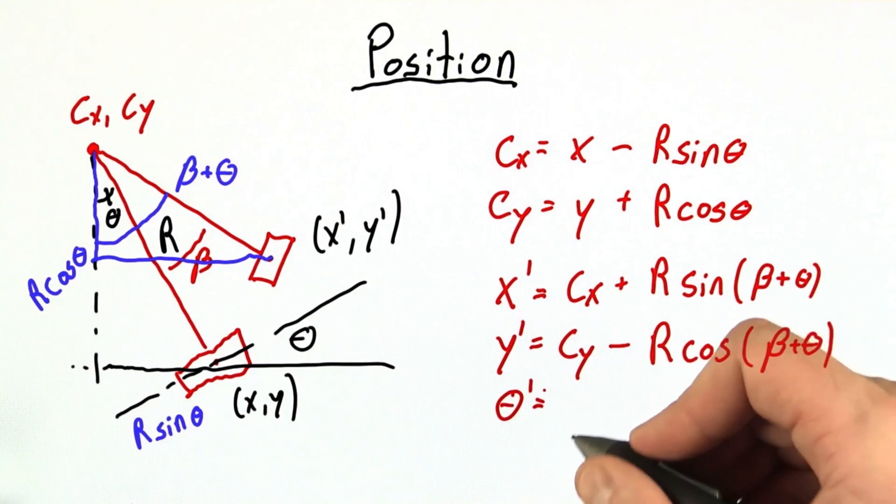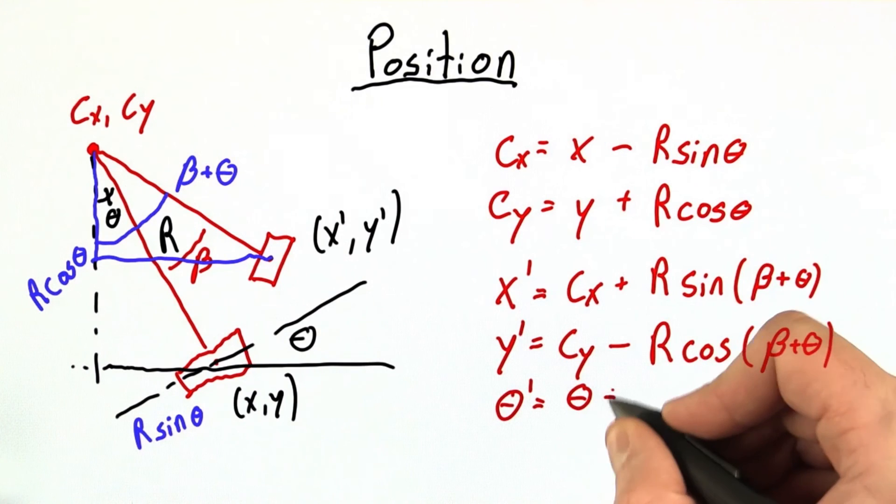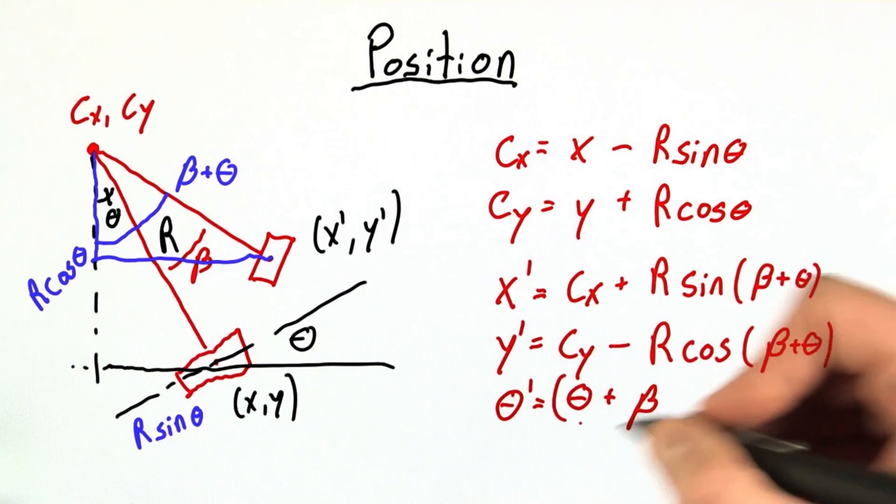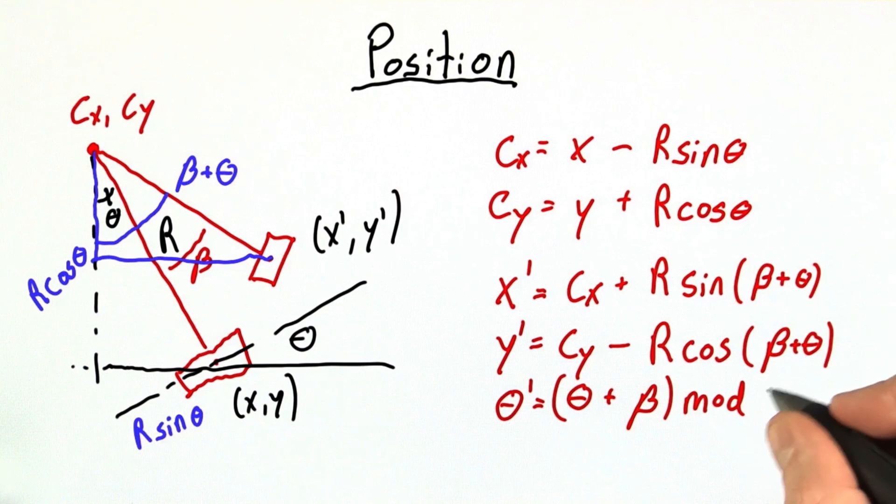Theta prime, of course, will just be equal to our old theta plus the turning angle, and we can't forget to make that mod 2 pi. Good work.